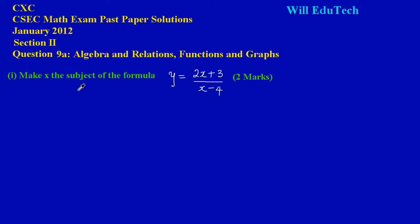This would be one of your first questions that you would have to choose from out of three in section 2. In part 1, it states: make x the subject of the formula y = (2x + 3) / (x - 4). That's easy enough, so let's quickly get into that to see how we go about it.